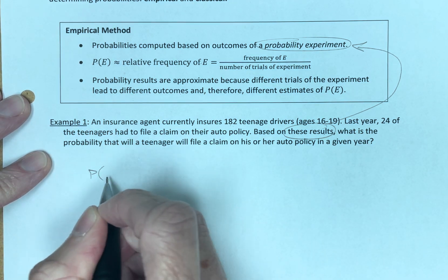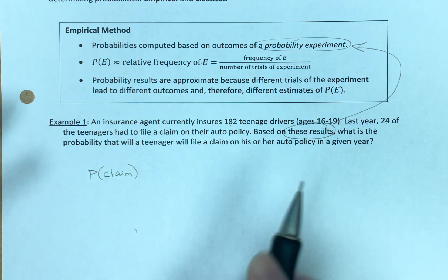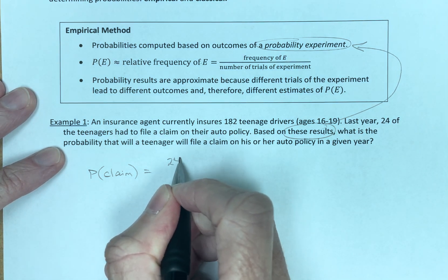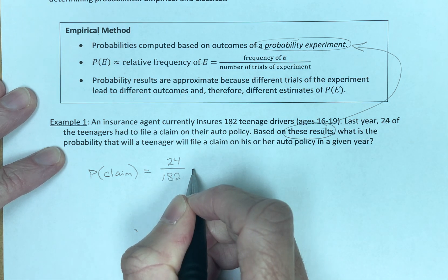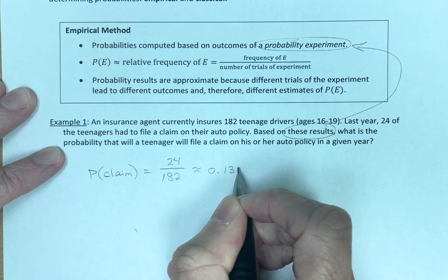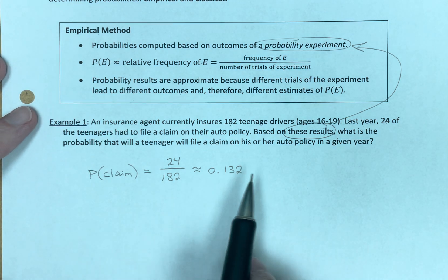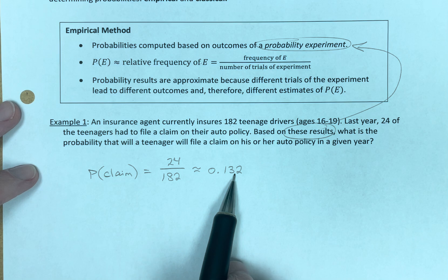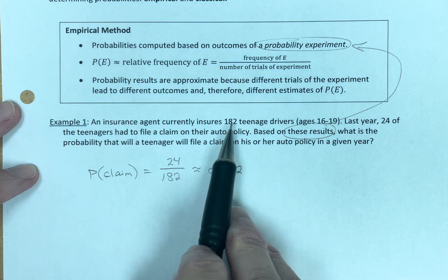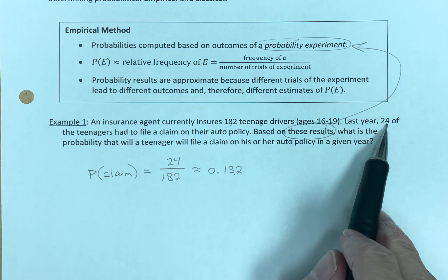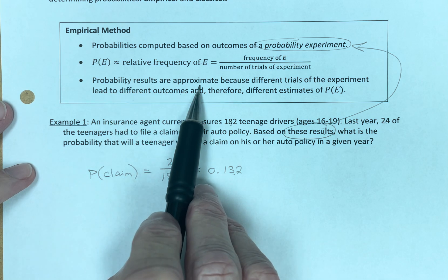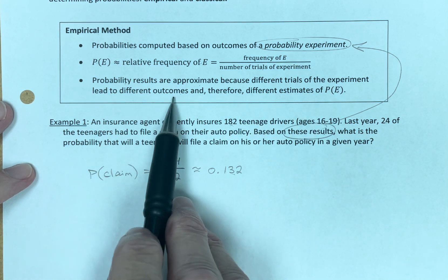Probability of a claim. Well, we have 24 who will file a claim out of 182. And that gives us, if I did the math with my calculator, approximately 0.132. So this is the probability for this particular group of 182 teenagers. If we chose another group of 182 teenagers, we might find that 26 filed a claim and that would make a change to this number here. So again, the probability results are approximate because different trials can lead to different outcomes.